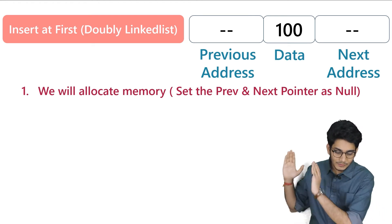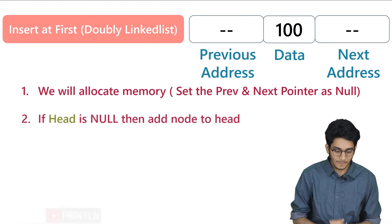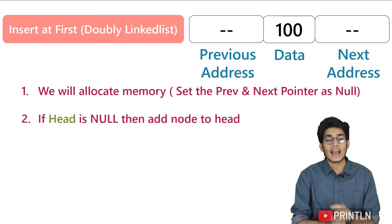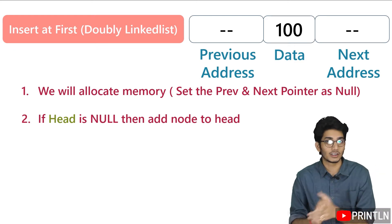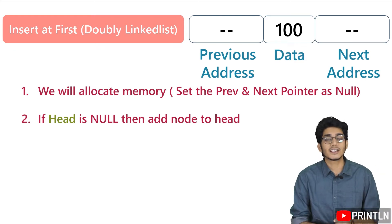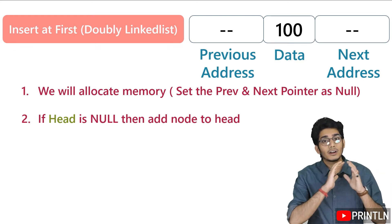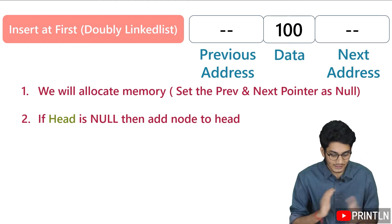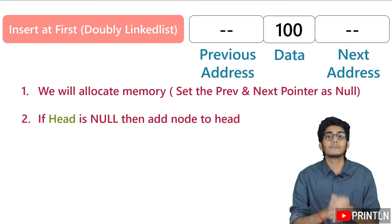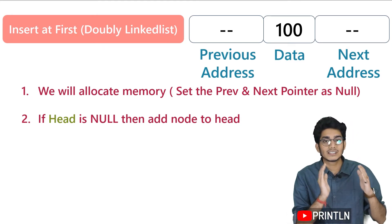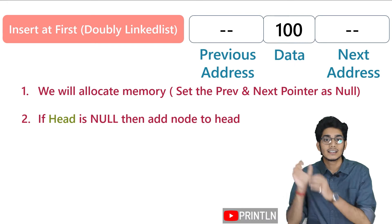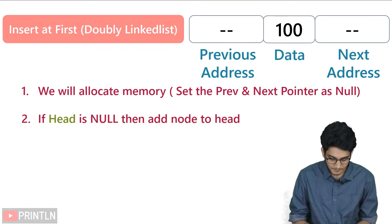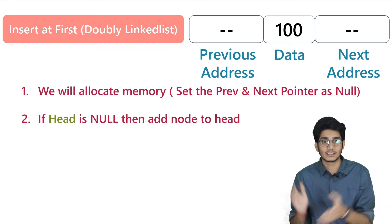At first, what we have to do is allocate the memory. Then we have to check that our head is null or not. This checking is mandatory for every insertion. If our head is null, then we'll just assign that temp, or that allocated node, into head.